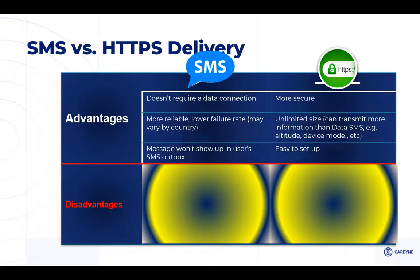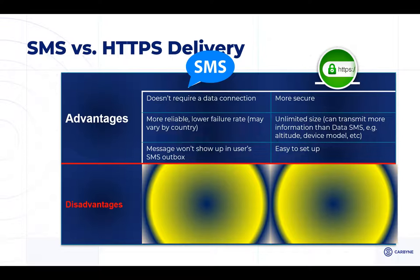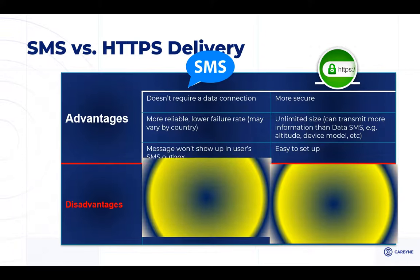With NG911 and the Additional Data Repository, as you upgrade to ESI nets and things like that, you'll have a place to put all of this additional information. If you have Carbine, we'll have a place to display all that information in your call handling system. It's also easier to set up because of the key-value pair format. The disadvantage of SMS is that it's more difficult to set up and program, and even though it's not visible to other apps, it's still not encrypted when sent over the network — so a man-in-the-middle attack could pick up those messages.